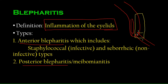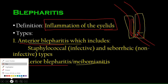If the inflammation involves the posterior area — mainly the meibomian gland — that is called posterior blepharitis, also called meibomianitis. So anterior blepharitis is a problem with the hair follicles, glands of Zeis, and glands of Moll; posterior blepharitis is a problem with the meibomian gland.